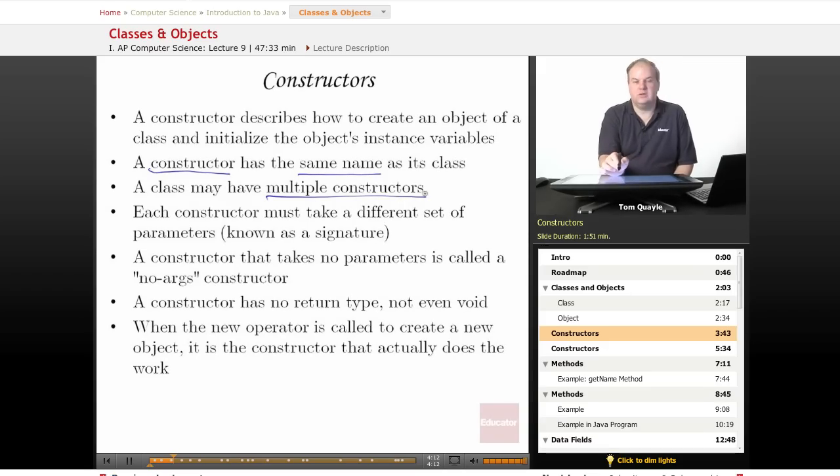A class may, however, have multiple constructors. Each constructor has the same name as the class but must take a different set of parameters. The parameters are what go inside the parentheses when you call that constructor, and the parameters are known as a signature. We'll talk more about signatures later in this lesson.